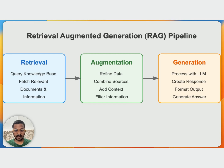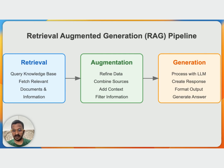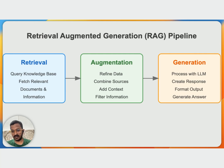The retrieval stage is the initial process of querying and fetching relevant information from the knowledge base — it can be your vector database or anything like that. Then comes the augmentation stage, where refinement and enhancement of the retrieved data happens. You basically refine the retrieved documents, combining different sources and adding extra context to the retrieved text chunks. The third step is generation, where the language model processes the augmented information to create the final answer and output it back to the user. These three components form the RAG pipeline.